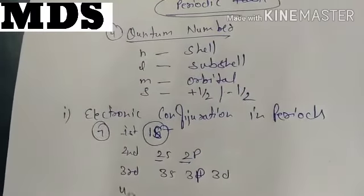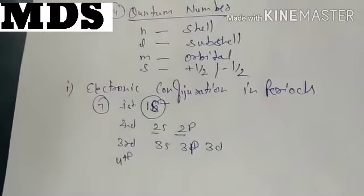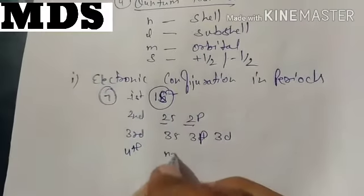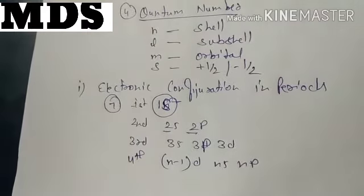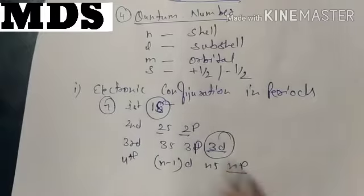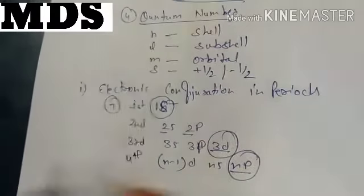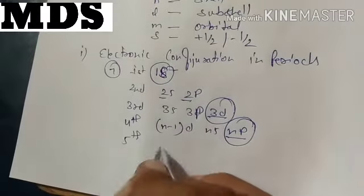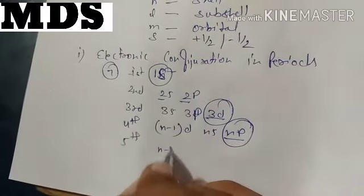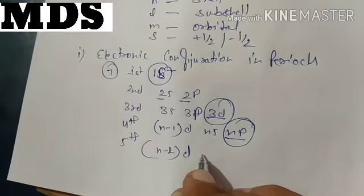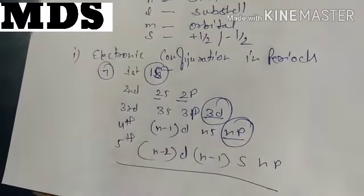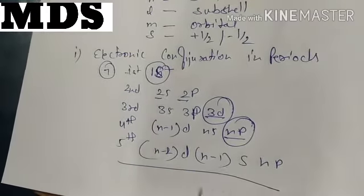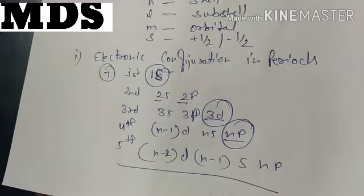If you go to the fourth period, you will see that in this case the configuration includes n−1 d and ns — the circled or underlined orbitals remain empty in this period. For the fifth period, the orbitals become n−2 f, n−1 s, and np. In this manner the electronic configuration goes on for the next periods.